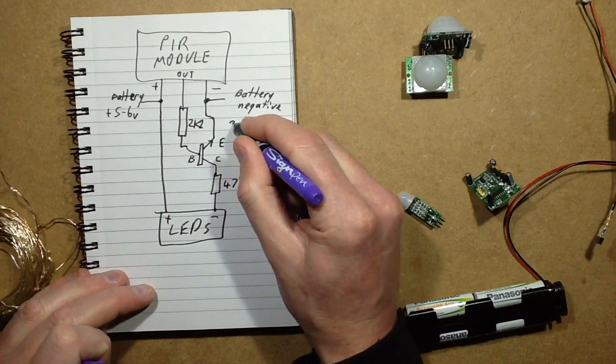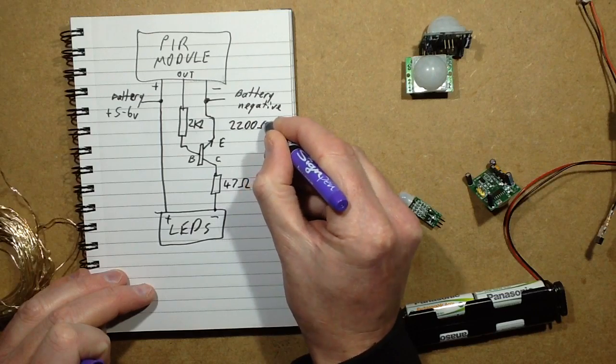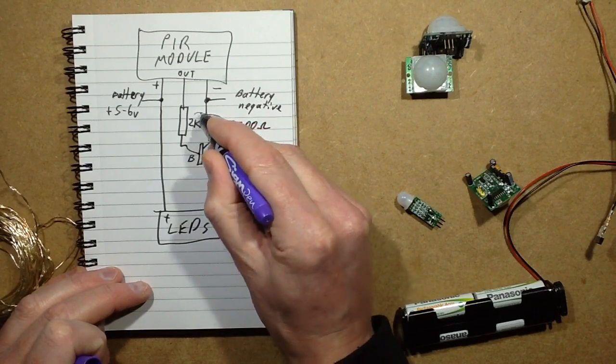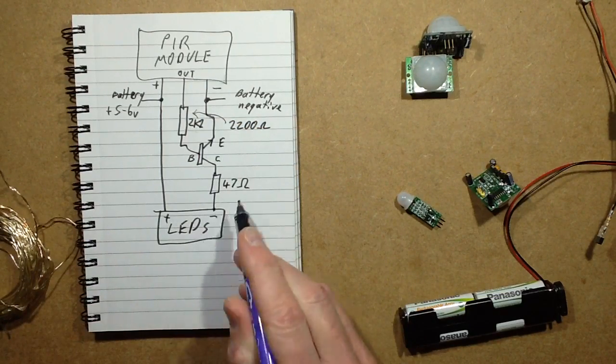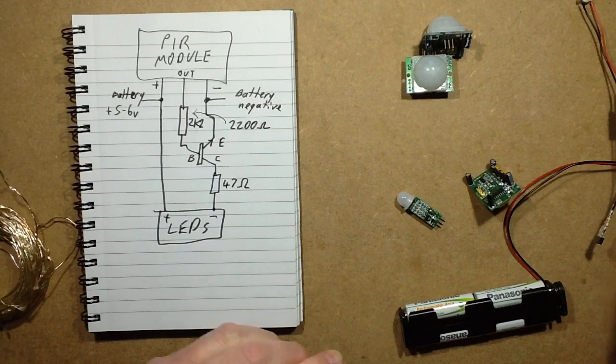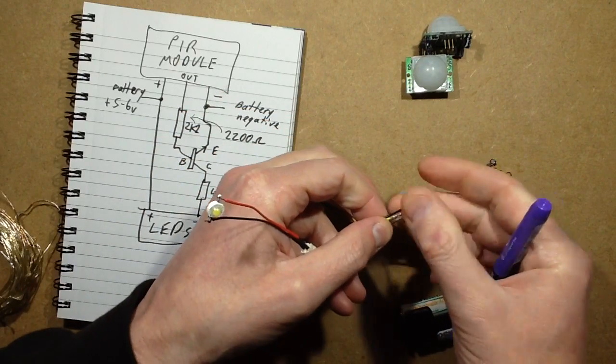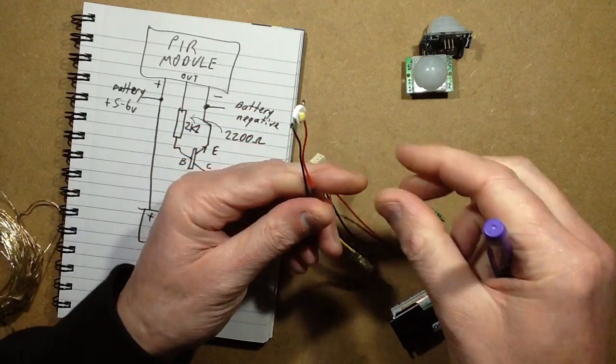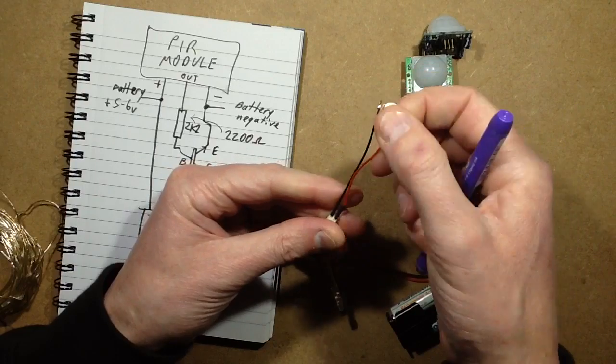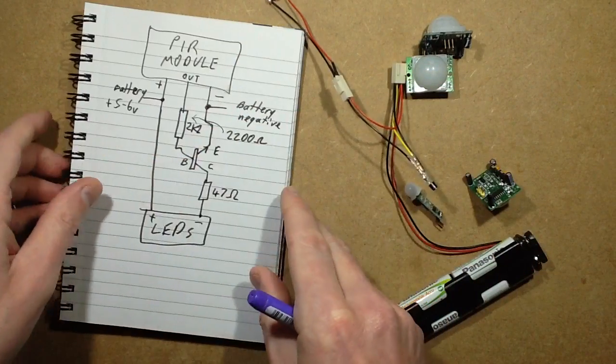So 2K2, I'll just write that as 2,200 ohms, and the 47 ohms. That's what I've done here. I've made a little loom up for testing these. At the moment I've soldered the resistors directly onto the transistor, but I've just got this high power LED just for visual effect to show it in operation.